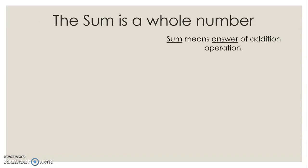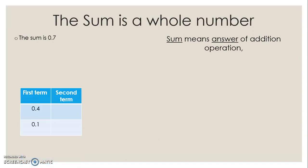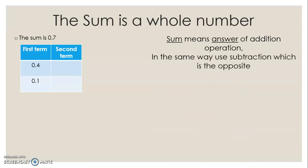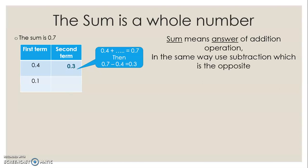The sum is a whole number. The sum means the answer of an addition operation. I have the sum as 0.7 and the first term is given; I want to calculate the second term. In the same way, use subtraction — the opposite operation. 0.7 minus 0.4 gives us 0.3. Second example: first term plus unknown second term equals 0.7. Subtract: 0.7 minus 0.1 gives us 0.6.